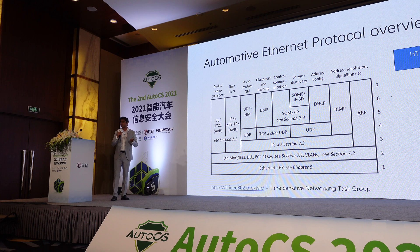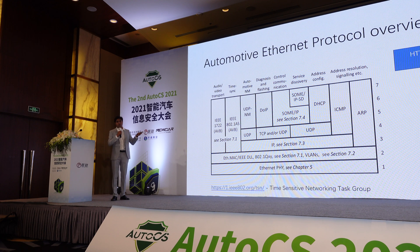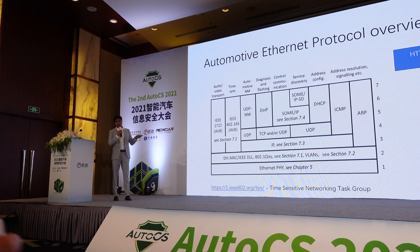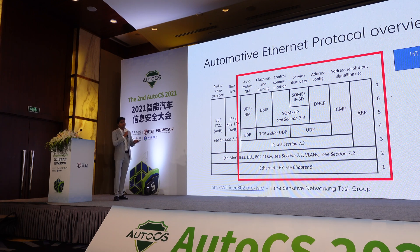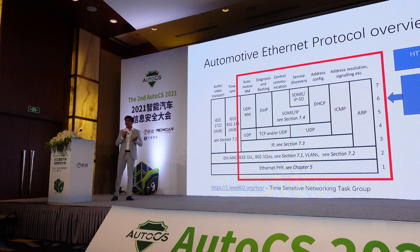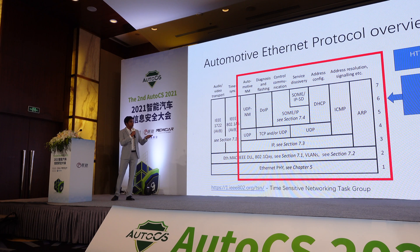I want to show the Ethernet protocols involved in vehicle communication. Ethernet is just a two-wire communication similar to CAN, but the protocols involved make it a high-speed, low-latency communication. Looking at the seven-layer architecture, we will primarily focus on the TCP, UDP, IP protocol, and SOME/IP part of the stack. I will not be focusing on time-sensitive networks or the AVB protocol as they are still in the drafting phase.